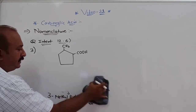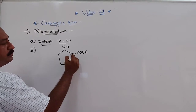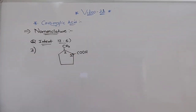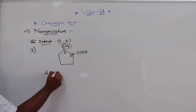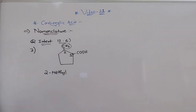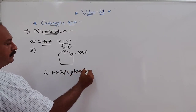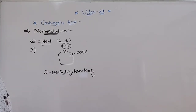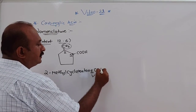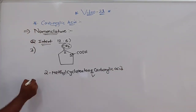The third structure has a cyclopentane ring. The carbon bearing the COOH group is given number 1, and position 2 has a methyl group. So the IUPAC name is 2-methylcyclopentanecarboxylic acid — here the E of pentane is not eliminated, it is retained, and carboxylic acid is added at the end.